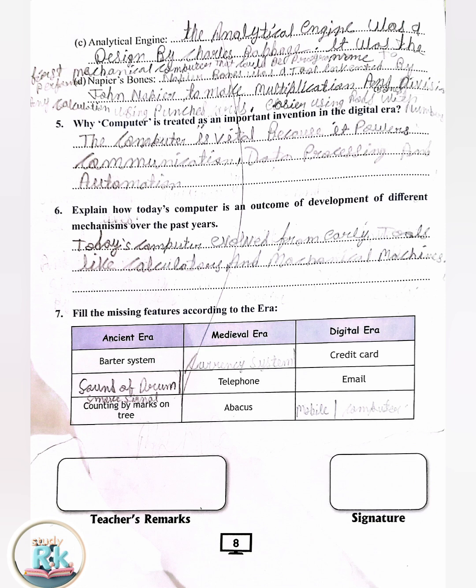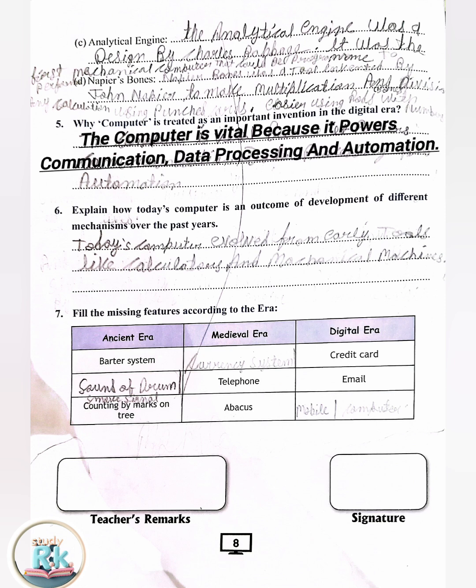5. Why is the computer treated as an important invention in the digital era? Answer: The computer is vital because it powers communication, data processing and automation.